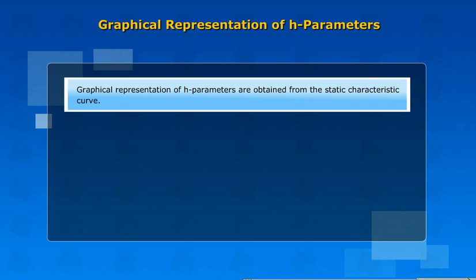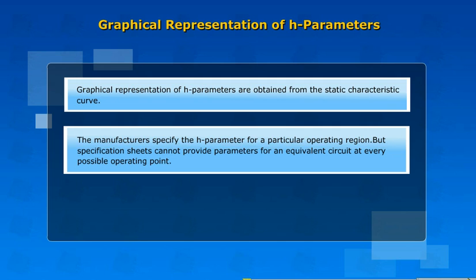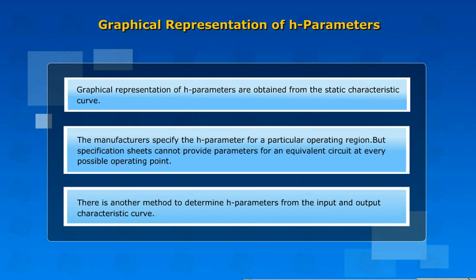Graphical representation of h-parameters are obtained from the static characteristic curve. The manufacturers specify the h-parameter for a particular operating region, but specification sheets cannot provide parameters for an equivalent circuit at every possible operating point. There is another method to determine h-parameters from the input and output characteristic curves.